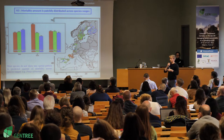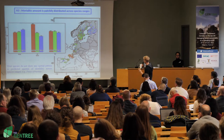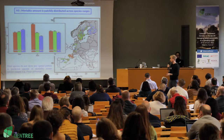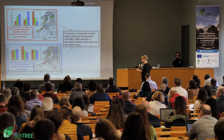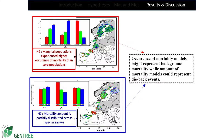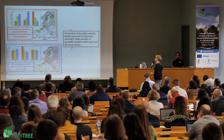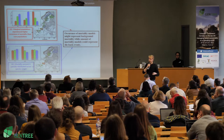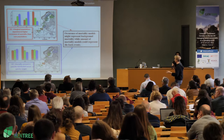When I do the same thing for the amount of mortality and project it on the map, what we see is no clear pattern. For most of the species, we did not have such a pattern as we had for occurrence of mortality models. From these two hypotheses, we suggest that maybe the occurrence of mortality models could represent background mortality, expected to be larger in the south, while the mortality amount model could represent dieback events, expected to be more patchily distributed.